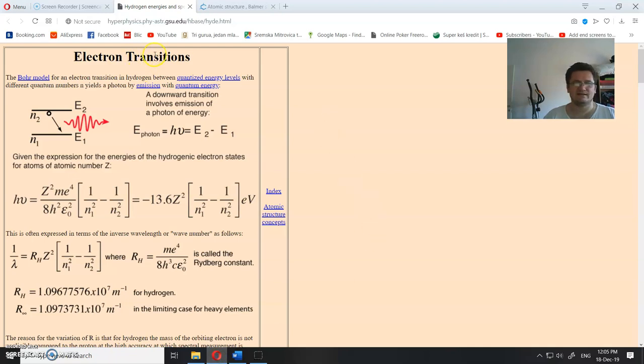So you have electron transition when it transits from this higher energy level to the lower energy level. There is a photon released. So electron moves from here to here and it releases the photon. And energy of the photon is Planck constant times the frequency of the photon, and that is equal to the energy difference in these two states.